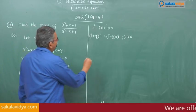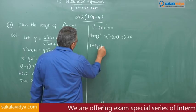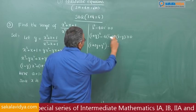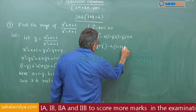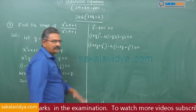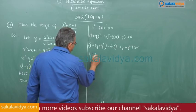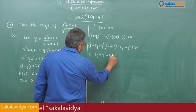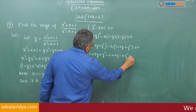Expanding using (a+b)² formula: 1 + 2y + y² - 4(1 - y)² ≥ 0, which gives 1 + 2y + y² - 4(1 - 2y + y²) ≥ 0. Simplifying: 1 + 2y + y² - 4 + 8y - 4y² ≥ 0.